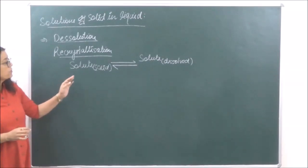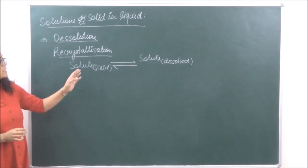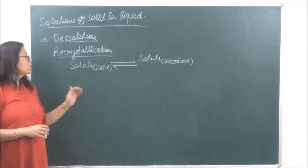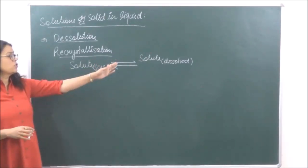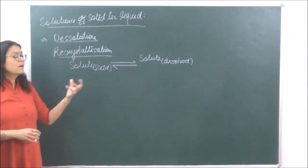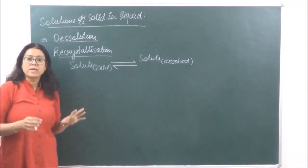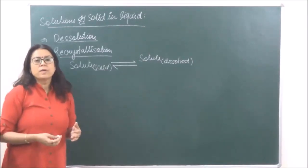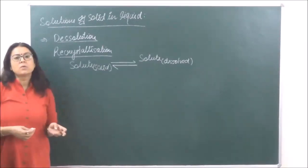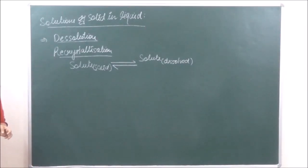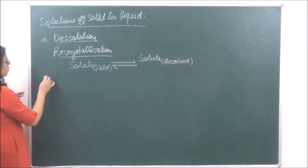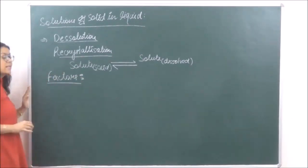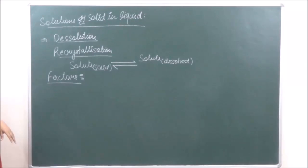Both the solute in the solid state and the solute in the dissolved state are in dynamic equilibrium with each other, meaning this keeps changing into that and that keeps changing into this. At equilibrium, both processes occur at the same rate — that is why we know equilibrium is when the forward reaction rate equals the backward reaction rate. Now, what are the factors which are going to influence the dissolution process?